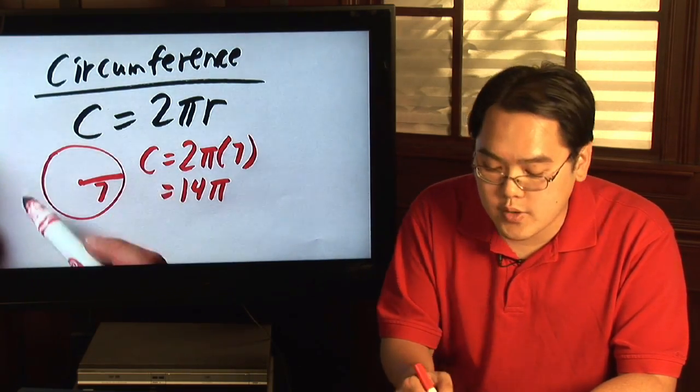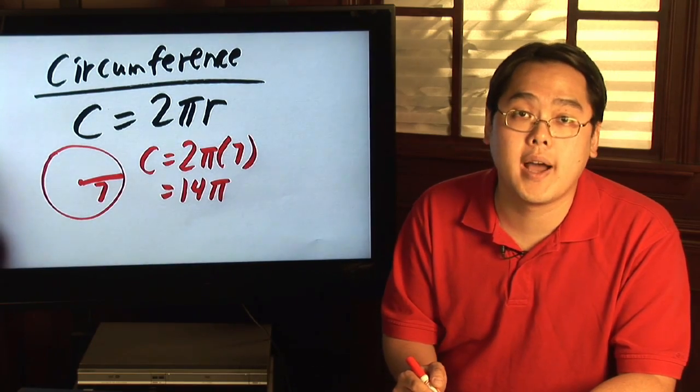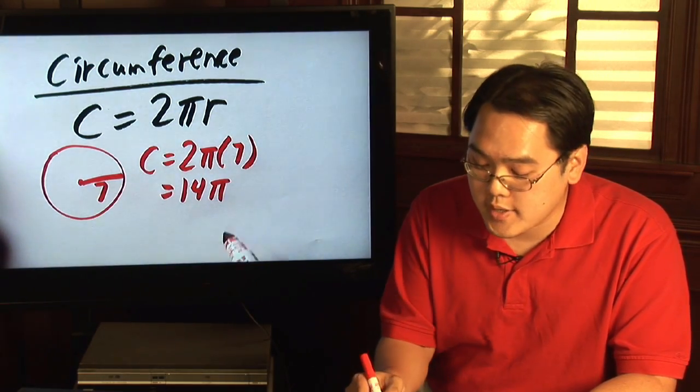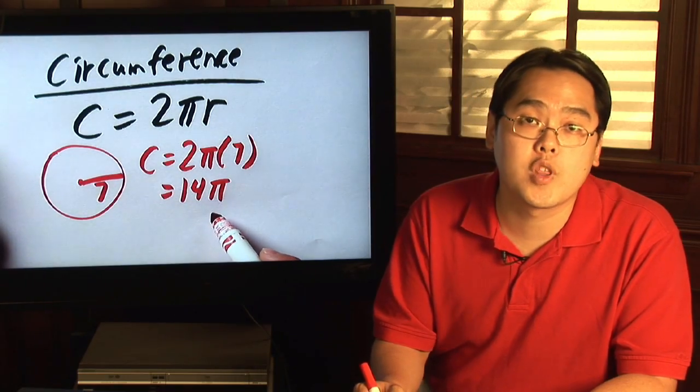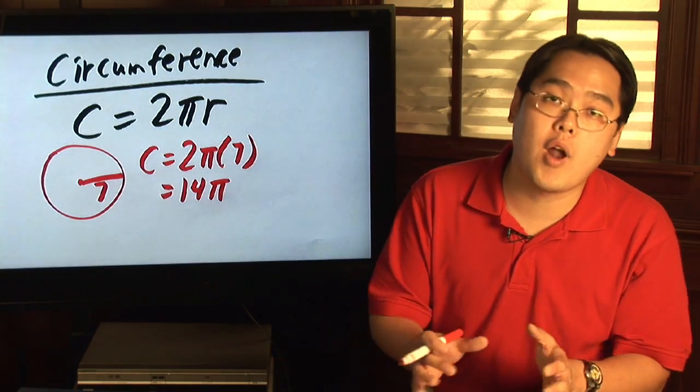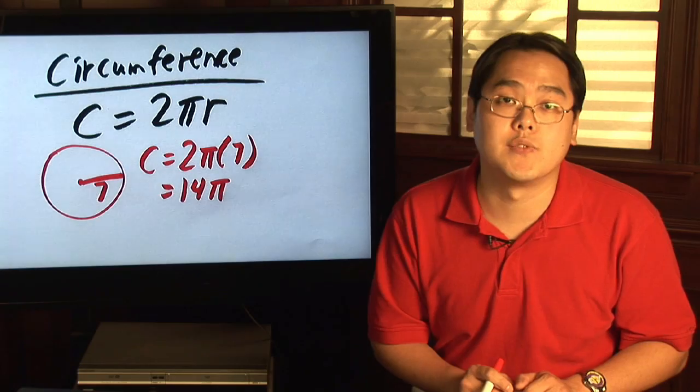That means the distance around exactly is 14 pi. But if you want to find a decimal answer, just go ahead and enter 3.14 where the pi is and you can have a more approximate answer as to the circumference of a circle.